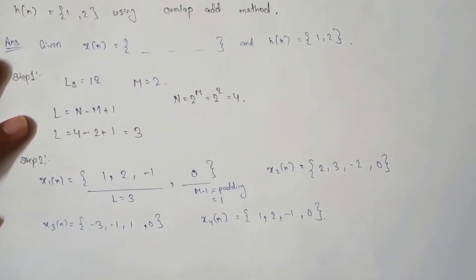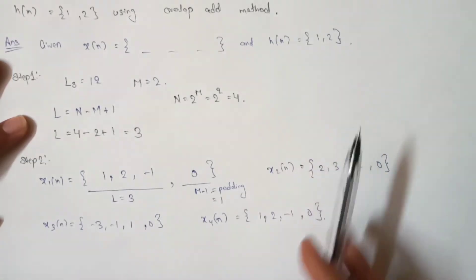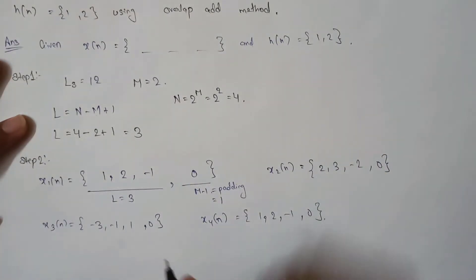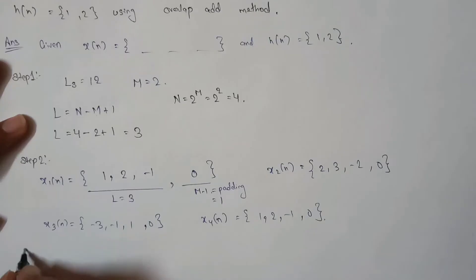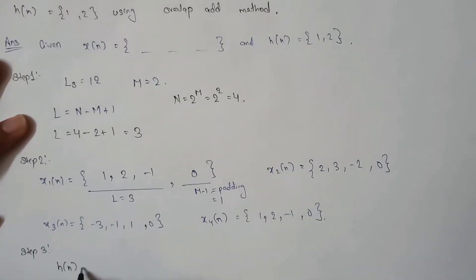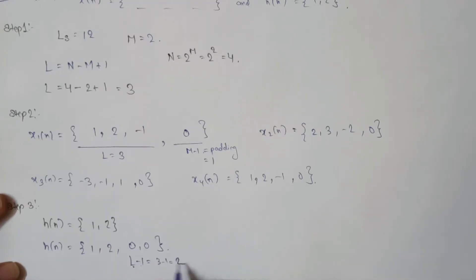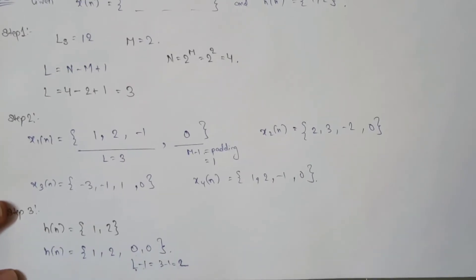Using these four sub-sequences, we will convolve each with the impulse sequence to get the output. In Step 3, we take the impulse response h(n) = [1, 2] and apply L−1 = 2 zeros of padding, giving the padded impulse sequence used for convolution.